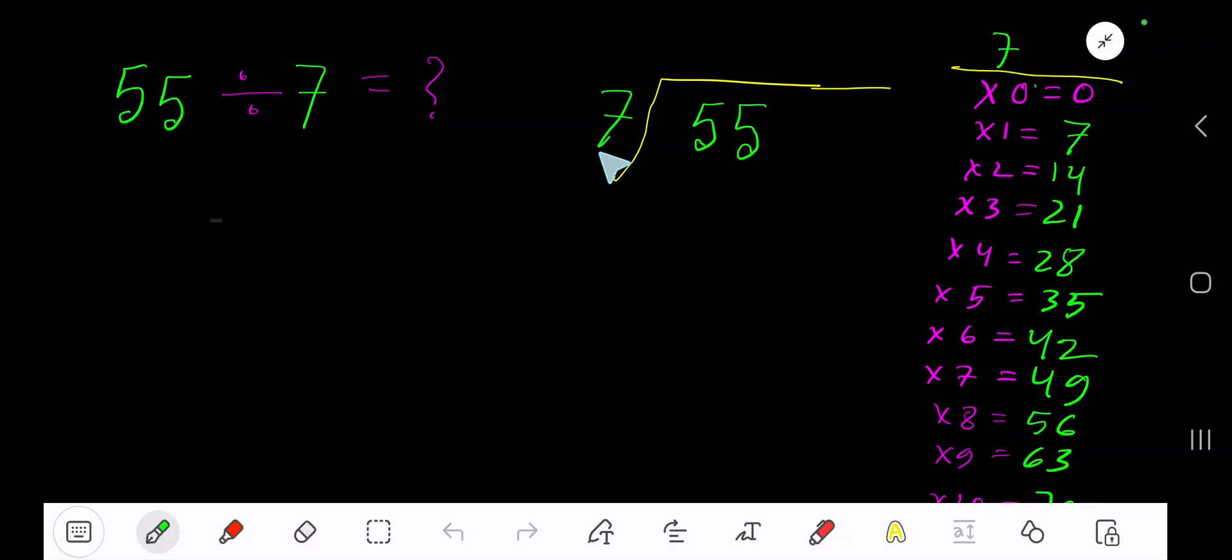55 divided by 7. Here 7 is the divisor, so we need the multiplication table of 7. 7 times 0 is 0, 7 times 1 is 7, 7 times 2 is 14, 7 times 3 is 21. To find the multiplication table of 7, just add 7 with the previous step: 0 plus 7 is 7, 7 plus 7 is 14, 14 plus 7 is 21.